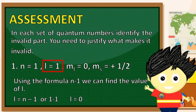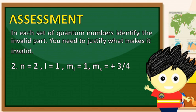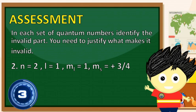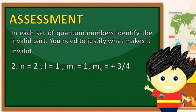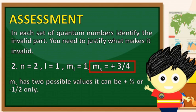Let us proceed on the second set. Our n is 2, l is 1, ml is 1, and our ms is positive 3/4. Ang invalid quantum number ay ang ms, dahil tulad nga ng sinabi natin, dalawa lamang ang maaaring maging value ng ms: positive 1/2 or negative 1/2 lamang. Hindi maaaring mas lalagpas pa sa mga nasabing value ang magiging value ng ating ms.